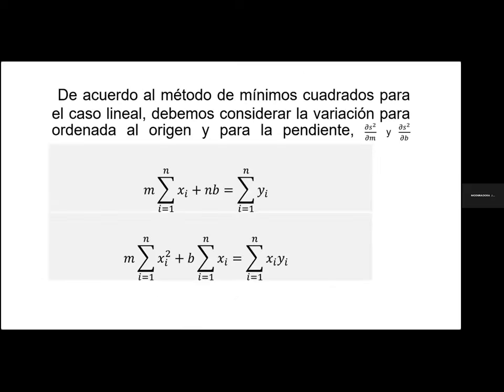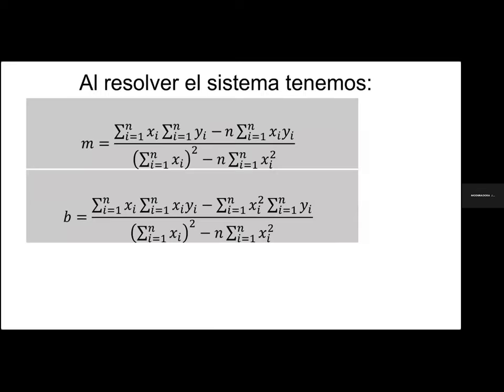Cuando tenemos la relación de dos variables, una dependiente y una independiente, de manera lineal, tenemos el interés de encontrar cómo cambia la variación de la pendiente y cómo cambia la variación de la ordenada, para el caso de la variabilidad. Lo que nos conlleva a obtener un sistema de ecuaciones de dos variables con dos incógnitas. Al resolver el sistema de ecuaciones, encontramos un valor para la pendiente y un valor para la ordenada al origen de esa línea recta que define el proceso lineal.